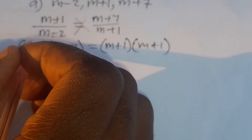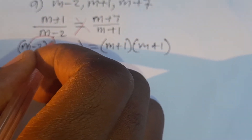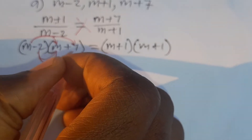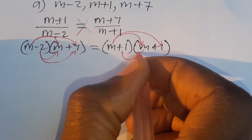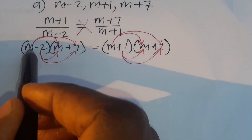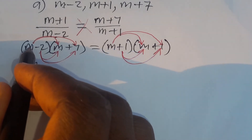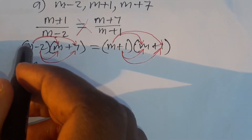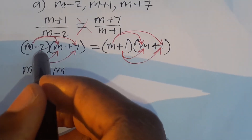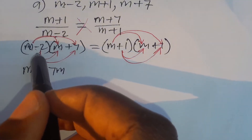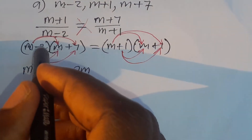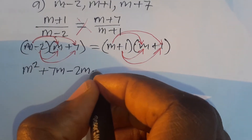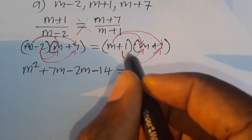Next, we expand and simplify. Multiplying out the left side: m times m is m squared, m times positive 7 is positive 7m, then negative 2 times m is negative 2m, and negative 2 times positive 7 is negative 14.